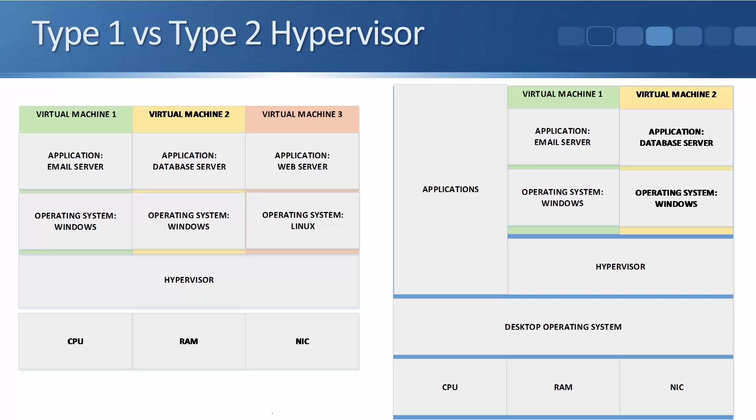Type 2 hypervisors are very useful if you're an IT engineer wanting to test Linux or Windows servers — you can run them as virtual machines on your laptop without needing separate hardware boxes. Or maybe you're in technical sales and want to demonstrate a product that runs on Linux: rather than carrying a separate hardware box to customer offices, you can run it as a virtual machine on your laptop, give a PowerPoint presentation, and also demonstrate the operating system.